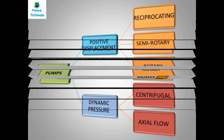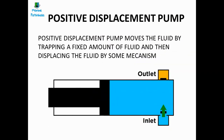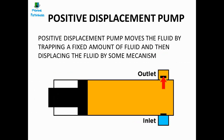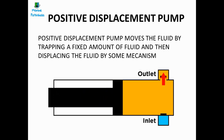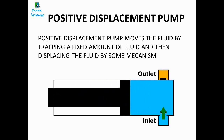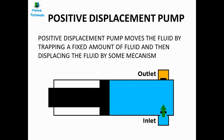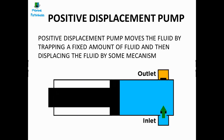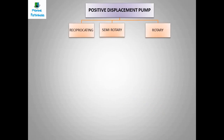Let us study positive displacement pumps first. A positive displacement pump moves the fluid by trapping a fixed amount of liquid in the body, and then displacing the fluid by using some mechanism. The fluid trapped in the body of the pump is pushed by some mechanism, which creates pressure and moves the fluid. There are many different types of positive displacement pumps.